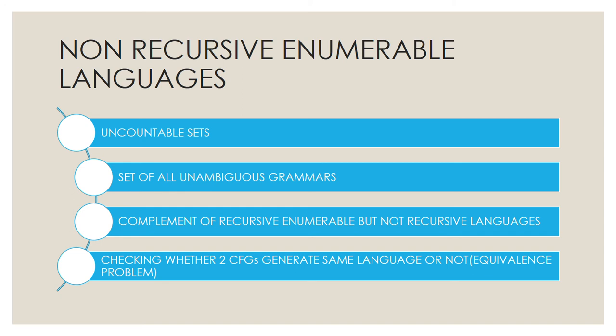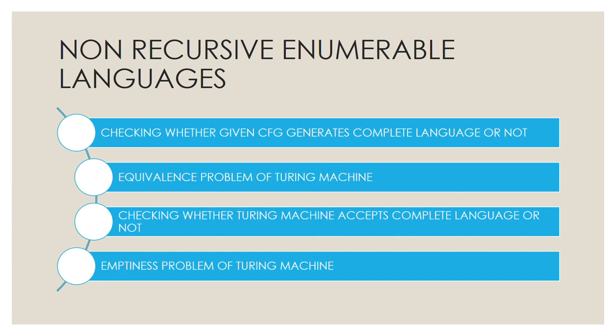Checking whether two CFGs generate the same language or not — the equivalence problem of CFG — is a non-RE language. This was noted earlier as absent from the recursive languages category. The equivalence problem of CFG is a non-recursively enumerable language.